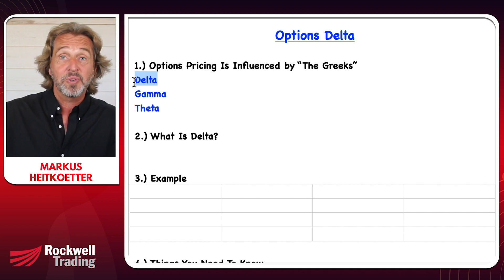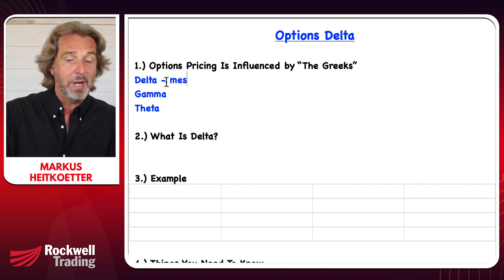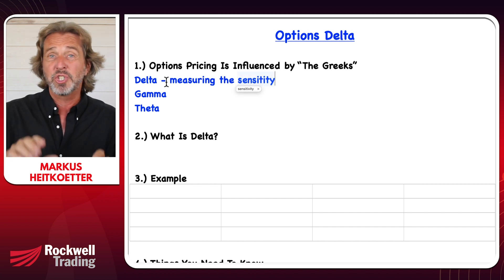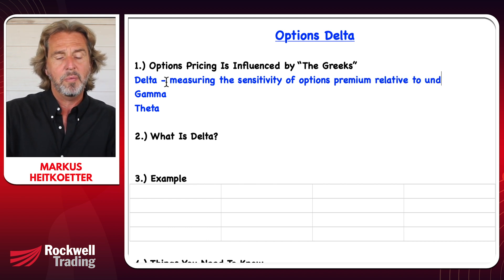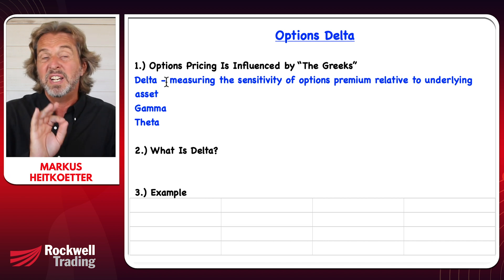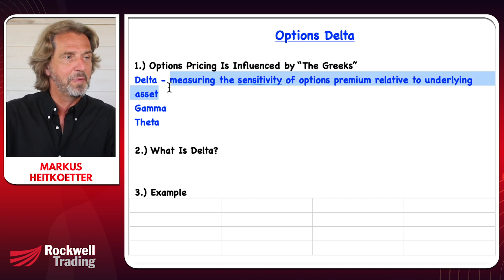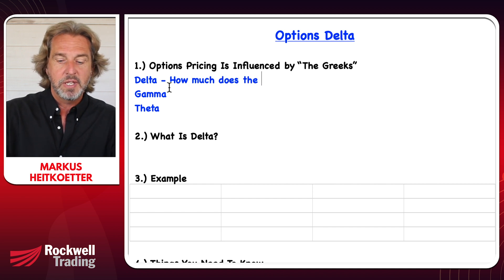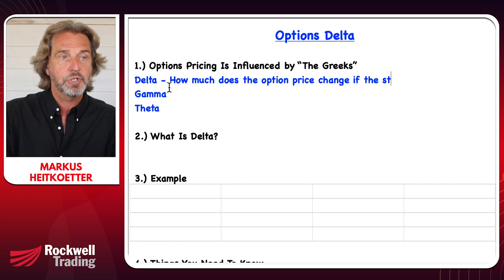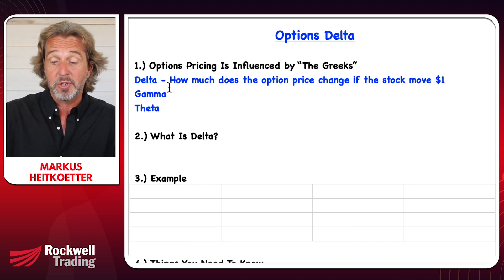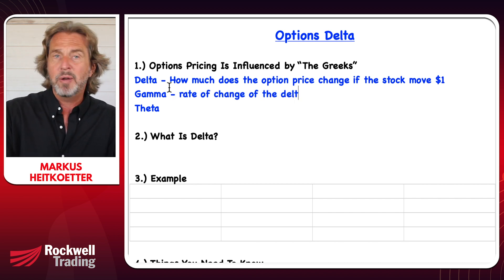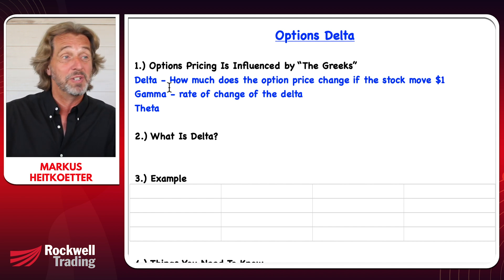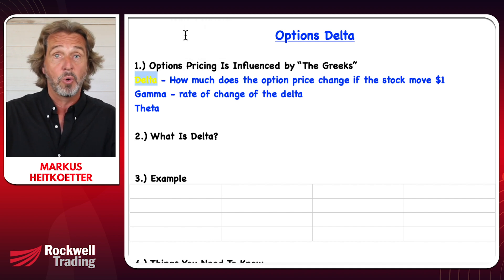There are the option Greeks. Delta is actually measuring the sensitivity of options premium relative to the underlying asset. In a nutshell, it basically says: how much does the option price change if the stock moves $1 to the upside or the downside? Gamma is the rate of change of the delta — we don't want to worry about that today. We want to focus on delta: what is it, what does it do, and why is it important?